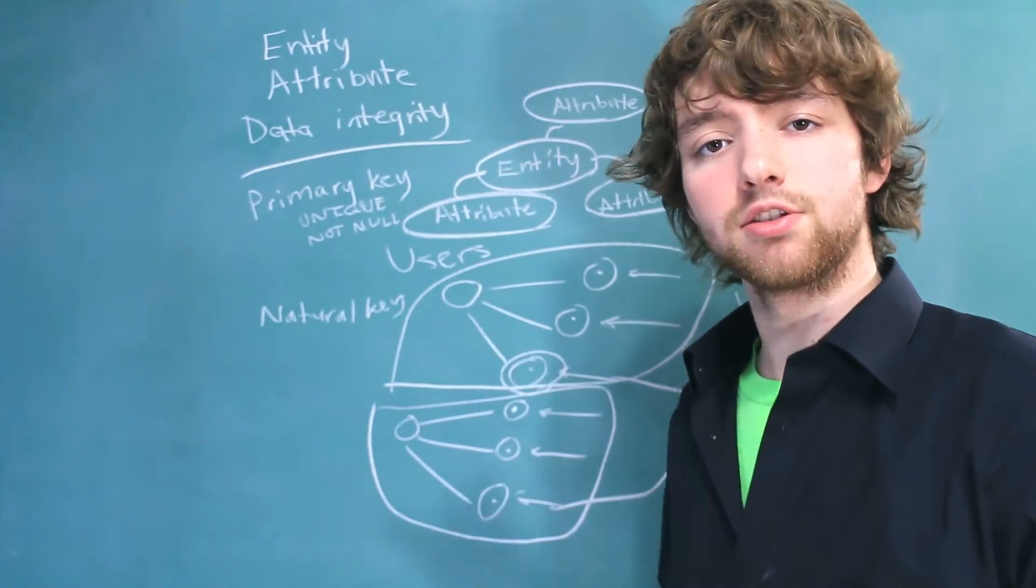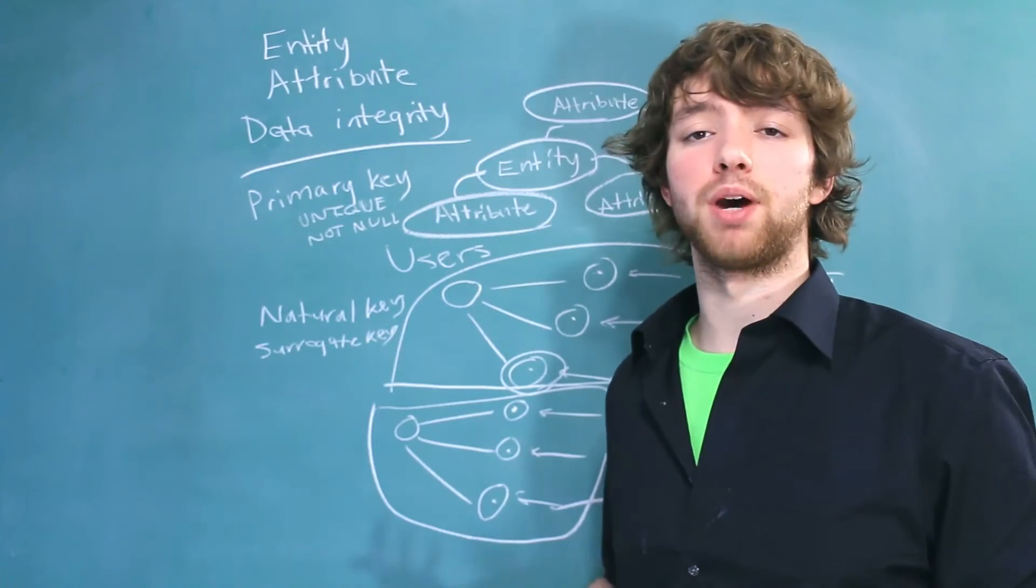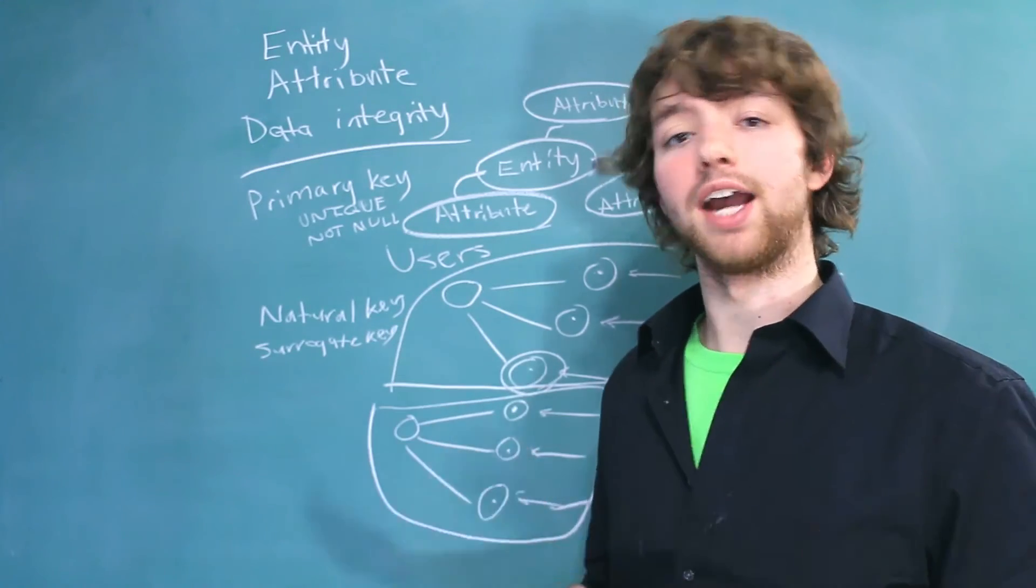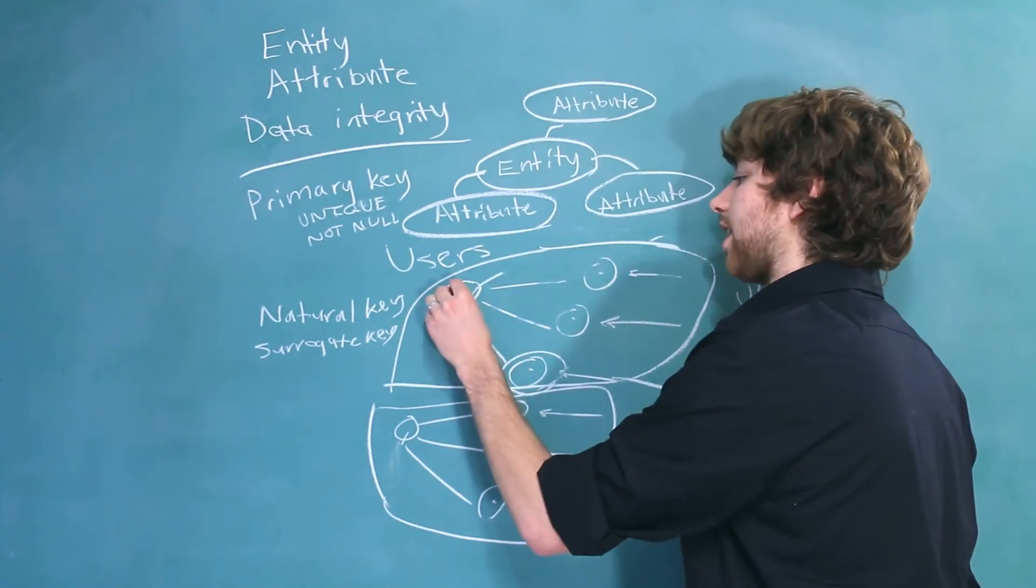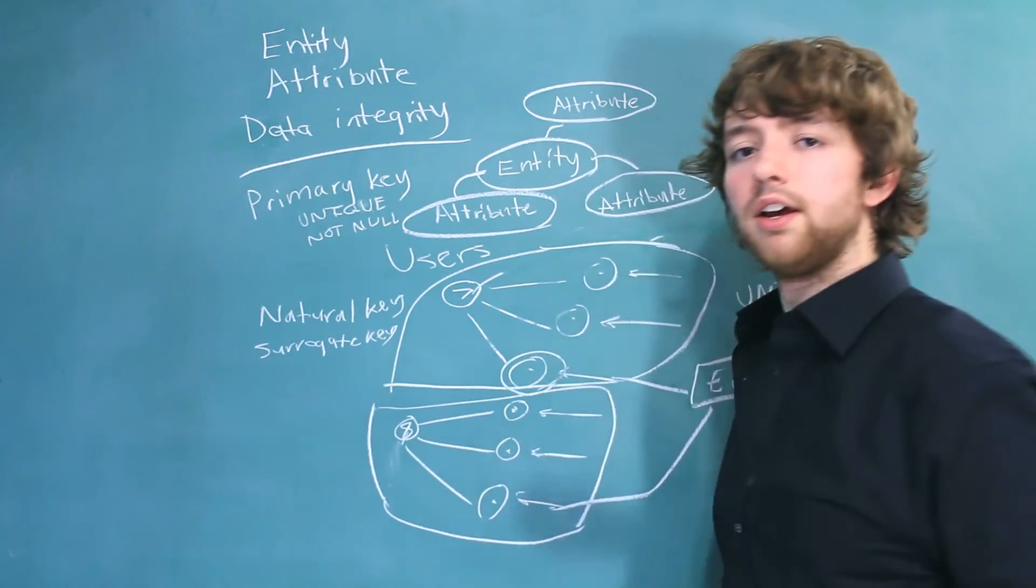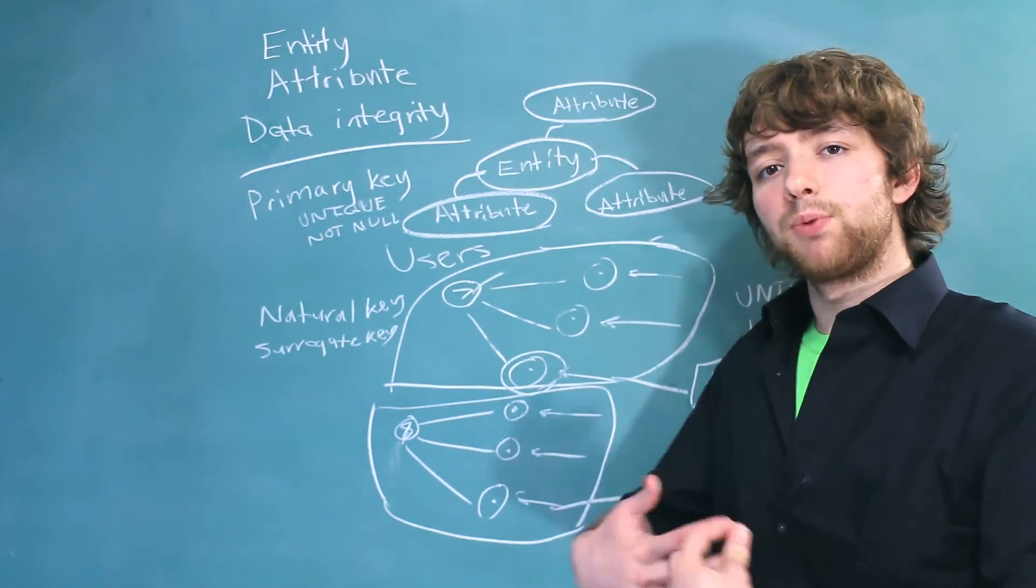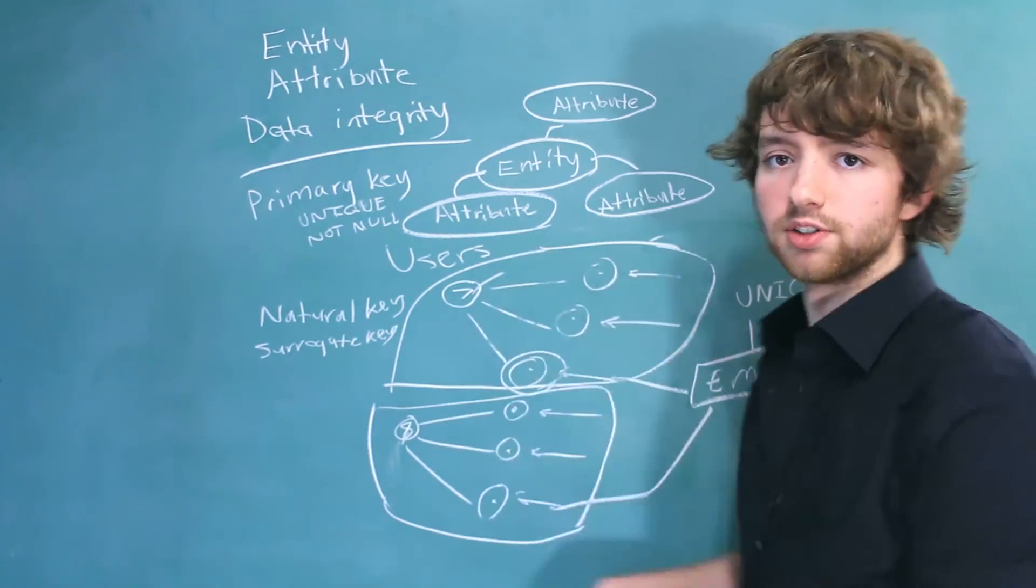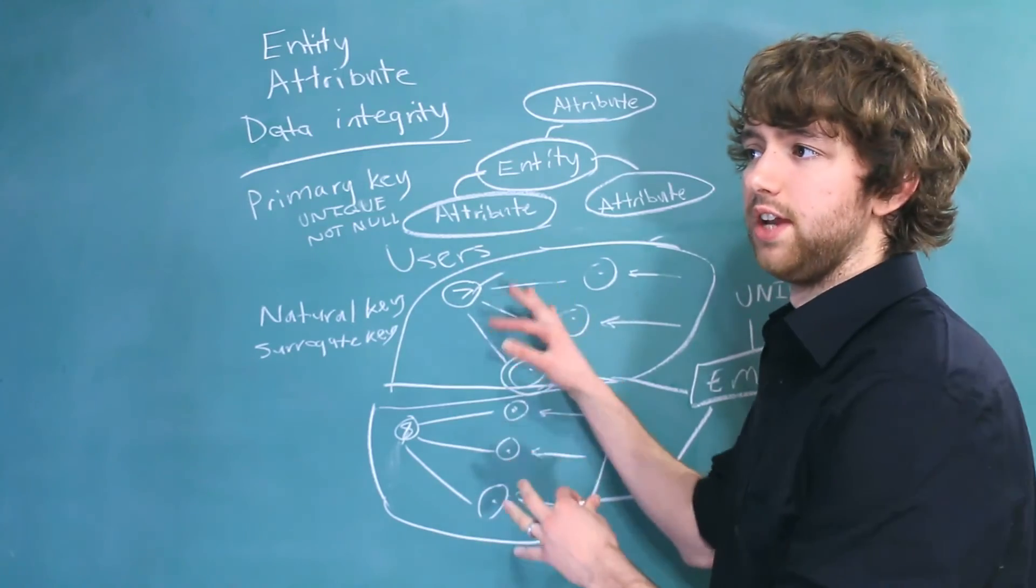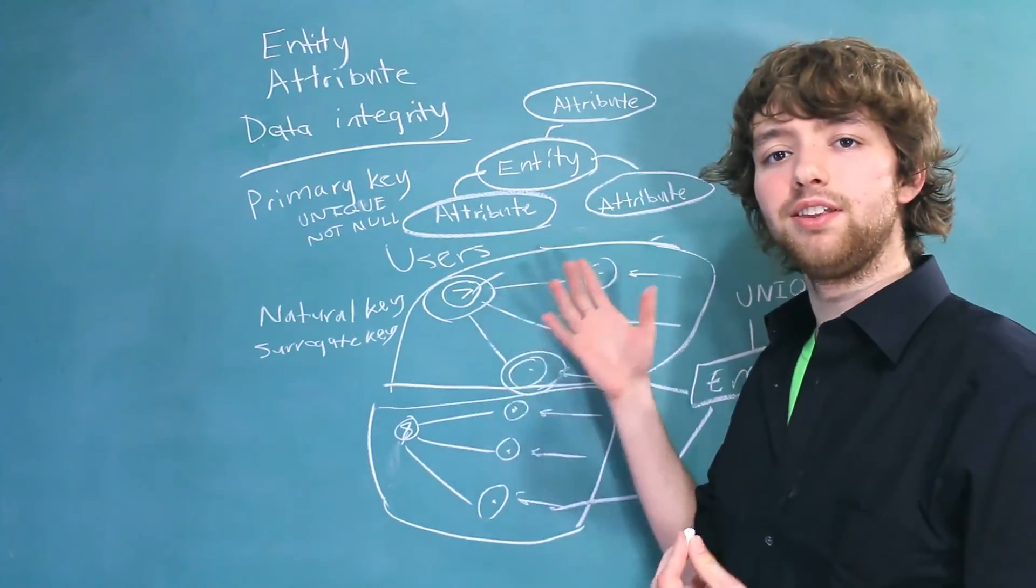Another type of key is a surrogate key. A surrogate key is just a value that's generated by the database, generally an ID. So we could say this user has the ID of 7, and this user down here has the ID of 8. We can use that to distinguish the two different users. That way, we know that there's actually two users and not one user entered into the database twice. That's because we have this to distinguish it, the ID.